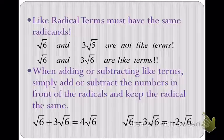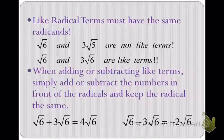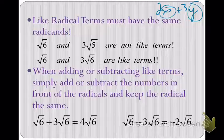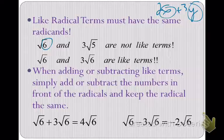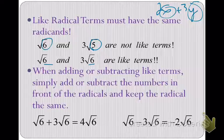First and foremost, if we're going to add and subtract, the only way you can add and subtract radicals is if they are like terms. They're a lot like variables — you can't add 2x and 3y because they have different variables. Radical terms need to have the same radicand. So square root of 6 and square root of 5 are not like terms, but two square roots of 6 are like terms because they have the same radicand, so we can add or subtract those.